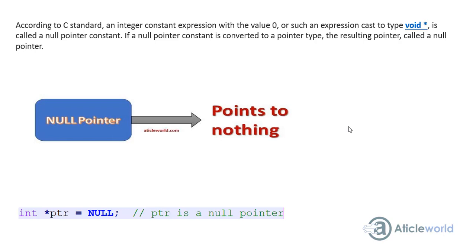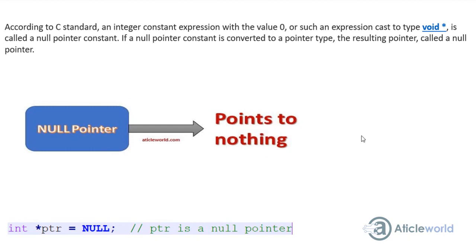In C programming, a null pointer is a special type of pointer used to avoid many undefined behaviors. In this lecture I will explain what a null pointer is and how we can use it in our C program. A null pointer is a pointer which points to nothing. According to the C standard, an integer constant expression with value 0, or such an expression cast to type void pointer, is called a null pointer. In C programming we use the macro NULL to define a null pointer.